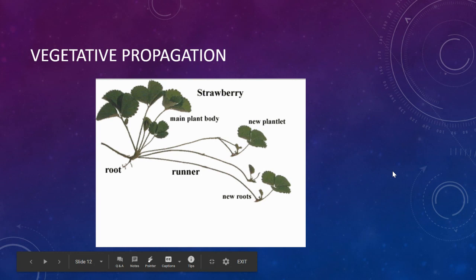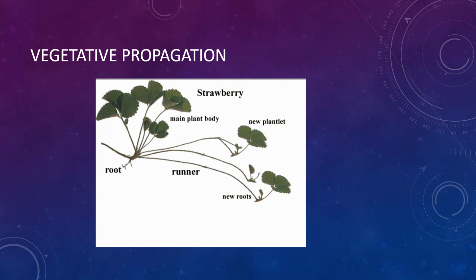Vegetative propagation is another manner in which organisms can asexually reproduce. Strawberries do this — they send out runners underneath the ground out of their root systems and start producing shoots that result in new plantlets genetically identical to the original. Many organisms reproduce this way, including strawberries and raspberries.